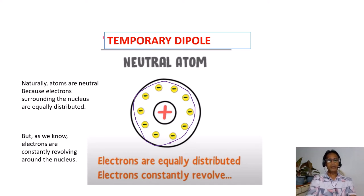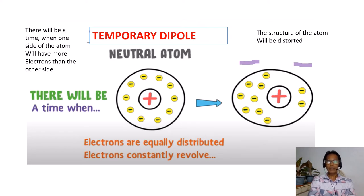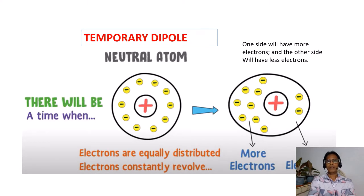But as we know, electrons are constantly revolving around the nucleus. There will be a time when one side of the atom will have more electrons than the other side. The structure of the atom will be distorted — one side will have more electrons and the other side will have less electrons.